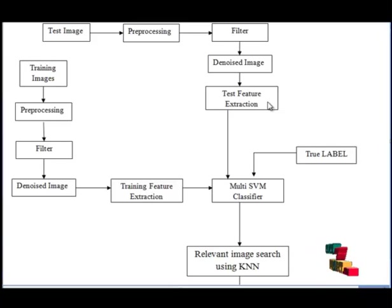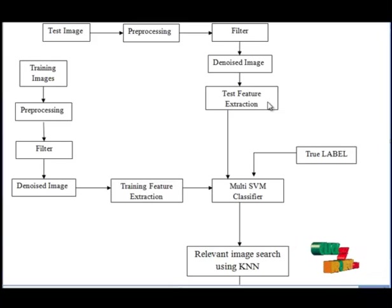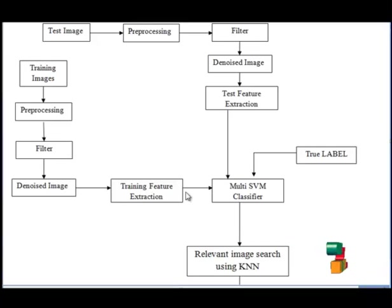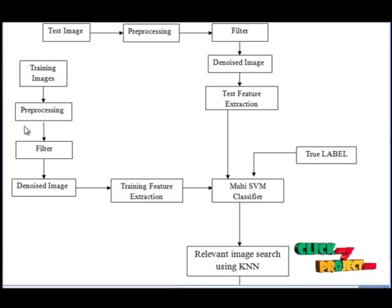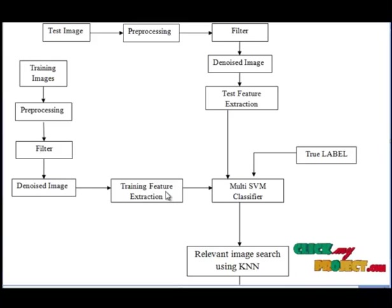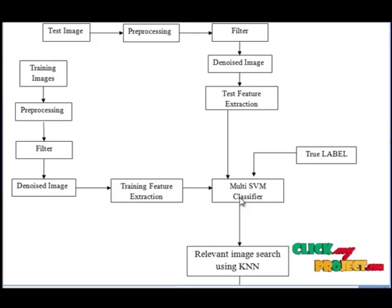In this feature extraction, we extract features — specifically the intensity value of each pixel in the image. The test features then go to the Multi-SVM classifier. At the same time, the training images also go to the Multi-SVM classifier. First, we load the train images, then preprocess and filter them. The denoised train images then go through feature extraction.